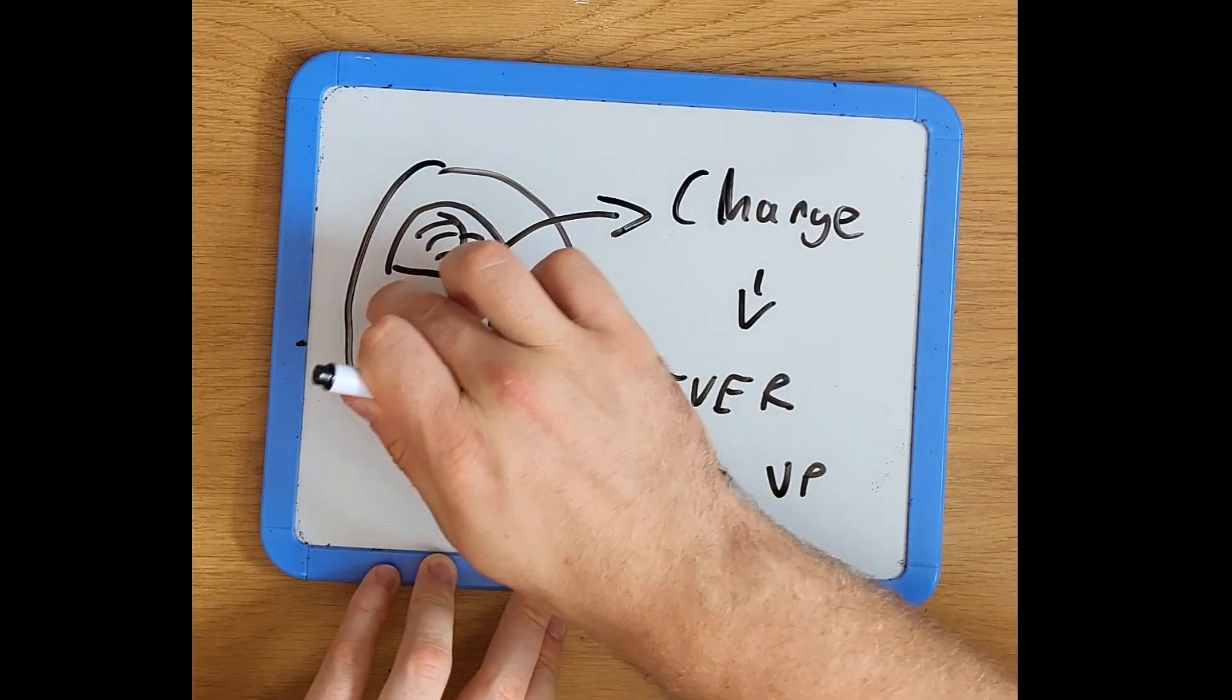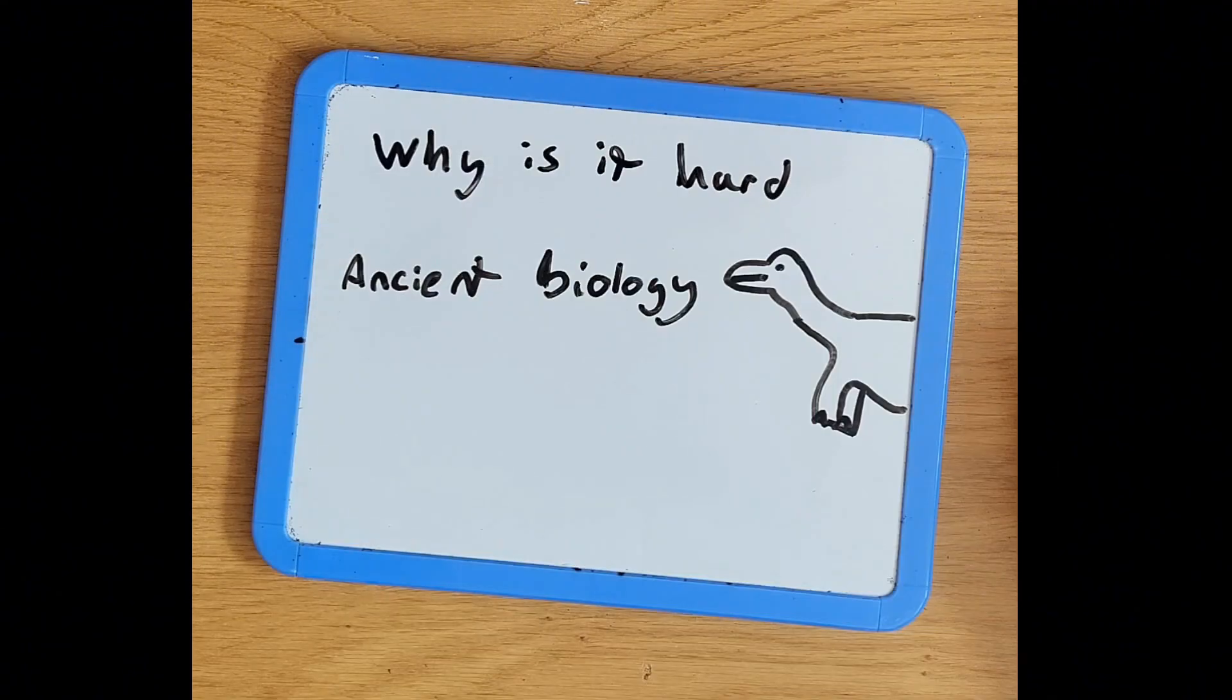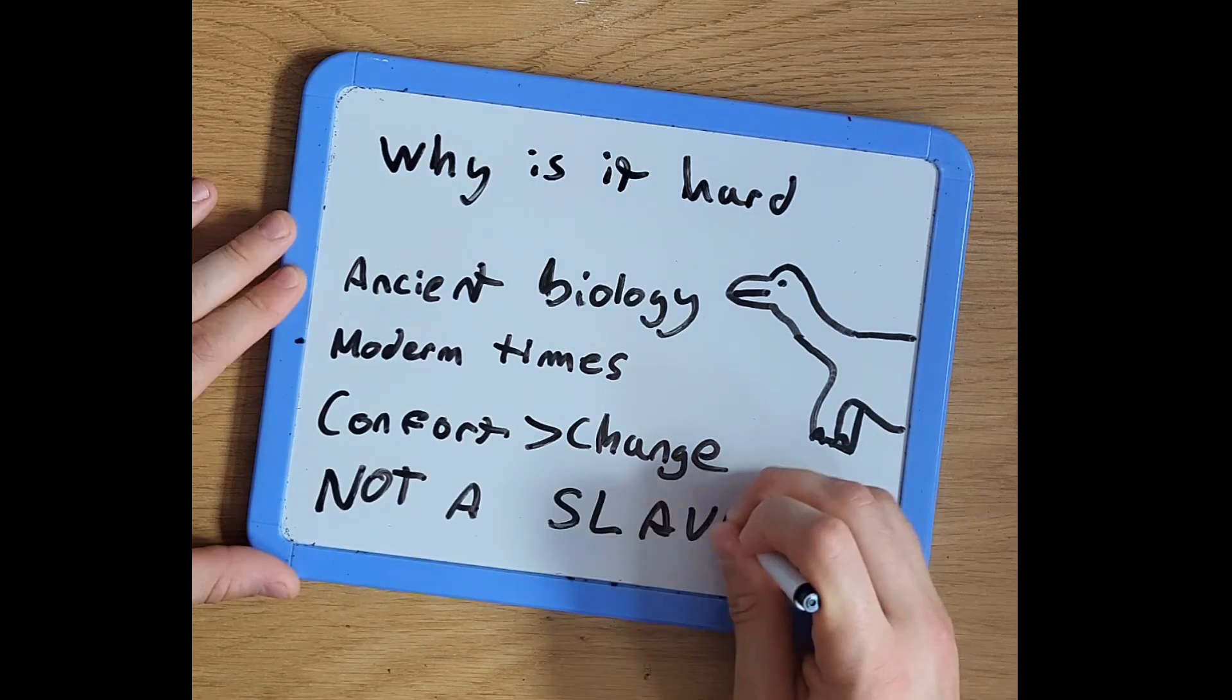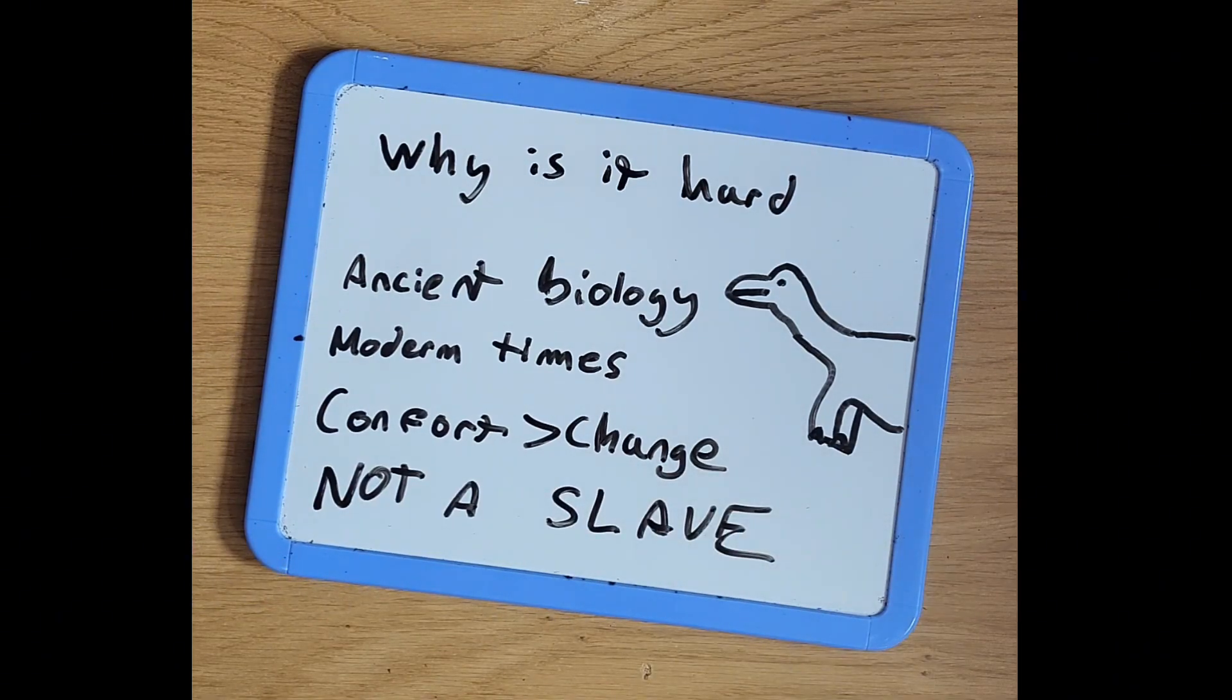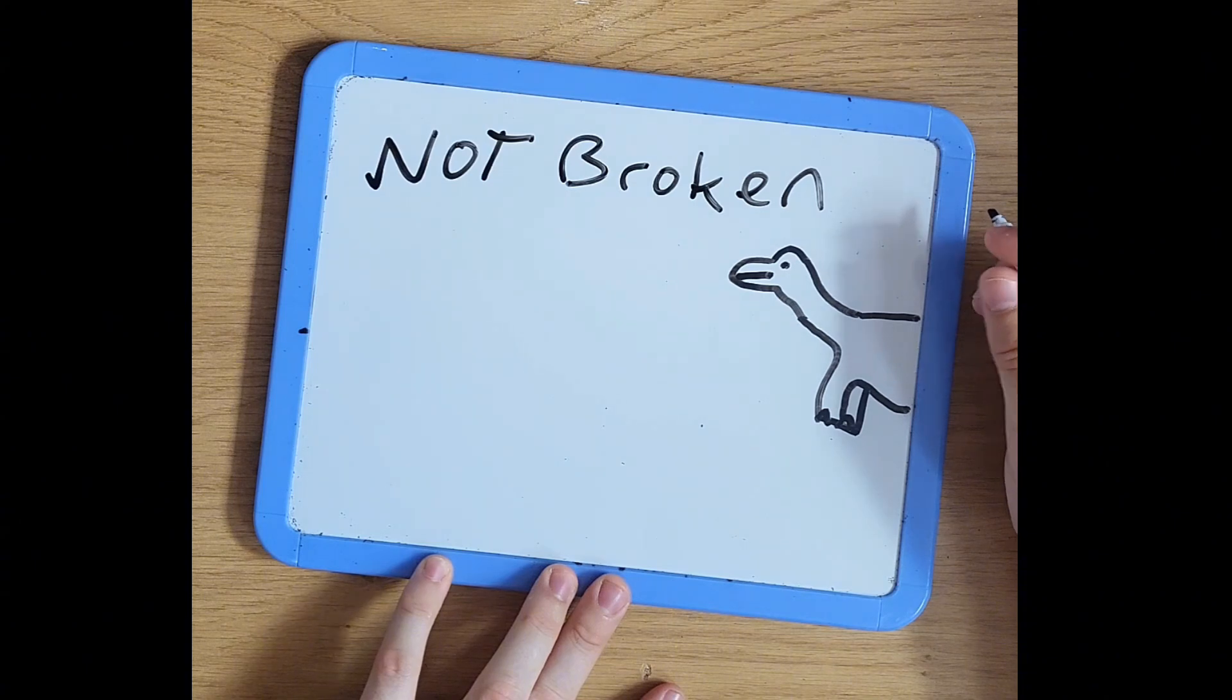So let's bring this home. Why is fat loss so hard? Because your body is ancient. Because your environment is modern. Because your brain wants comfort more than change. But guess what? You're not a slave to your hormones. You're not stuck in your past. You're not broken.